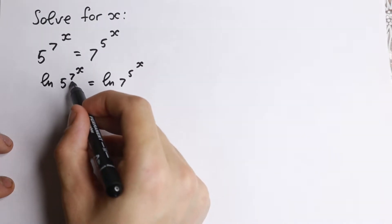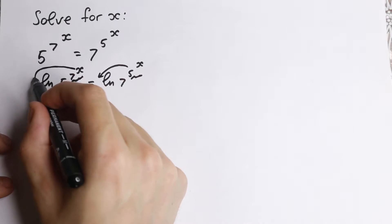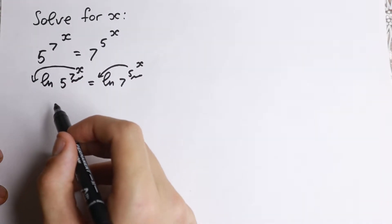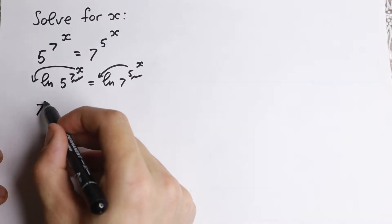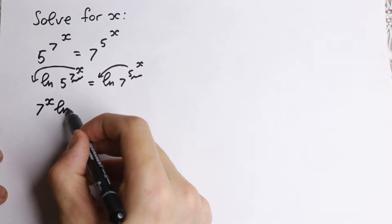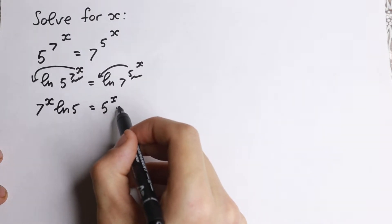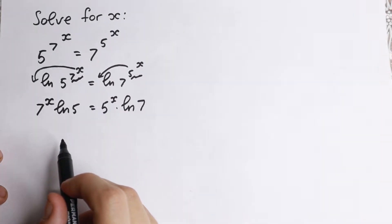And a lot of students know that these powers from here and from here jump in the beginning, so we can easily use this logarithm general property. So we have 7 to the x times natural log 5 equal to 5 to the x times natural log 7. So we have this expression.